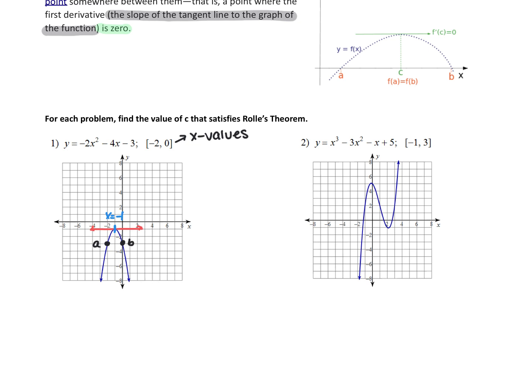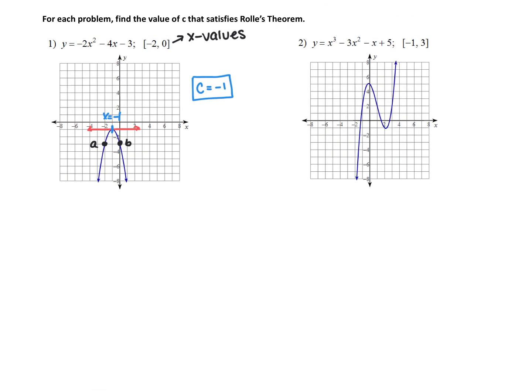So the answer to this question from problem number one is c is equal to negative one. But the whole point about Rolle's theorem is that you can do this algebraically. Remember, calculus is an old math where we didn't have calculators, so we needed to use things like theorems to solve for these things. So in order to find a horizontal tangent, we need to find a critical value. So step one, find the critical value.